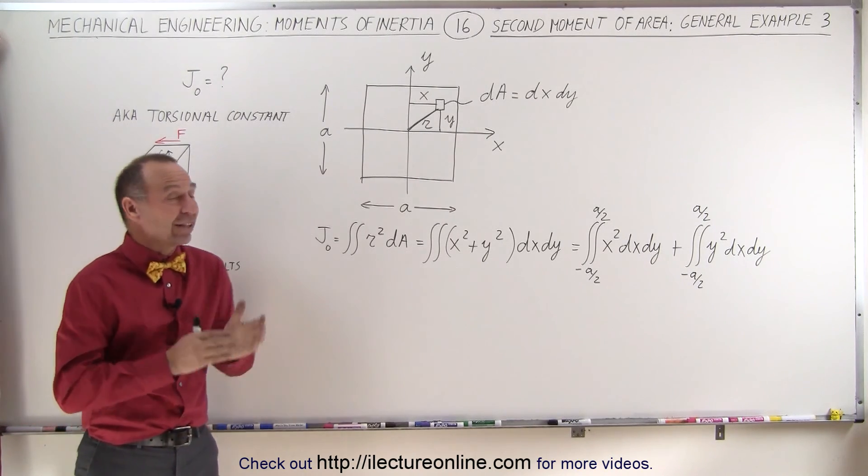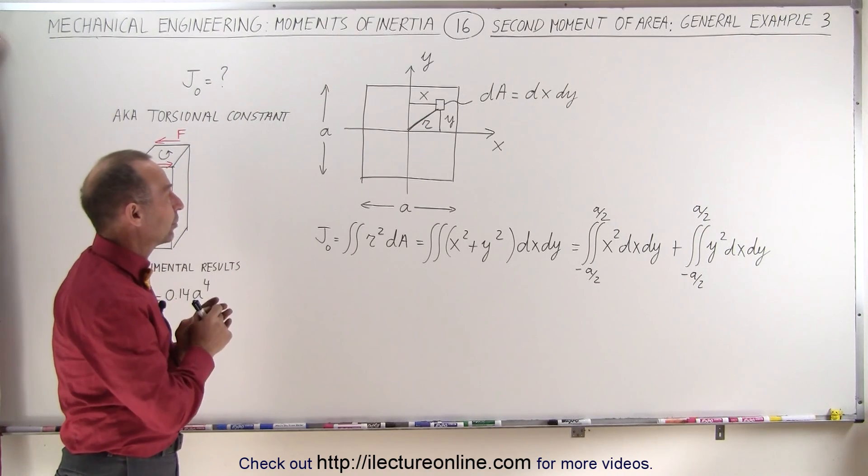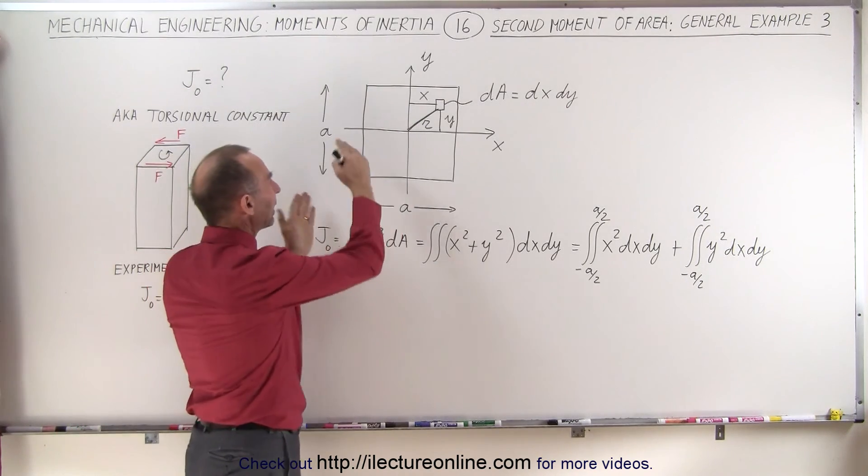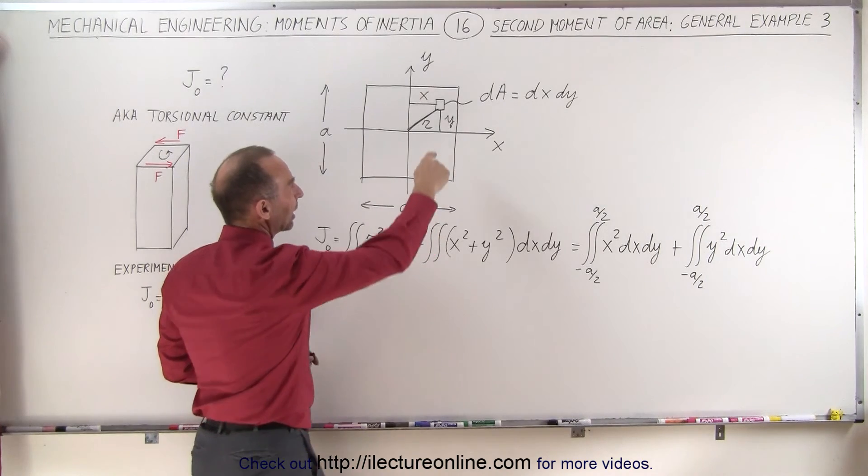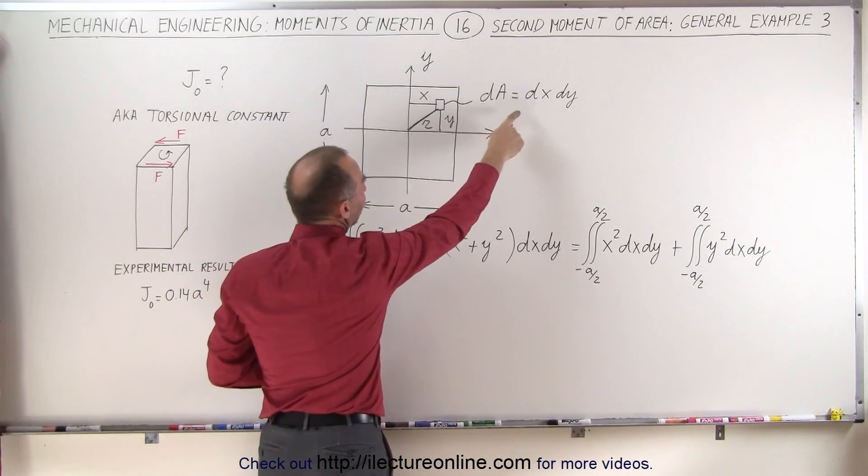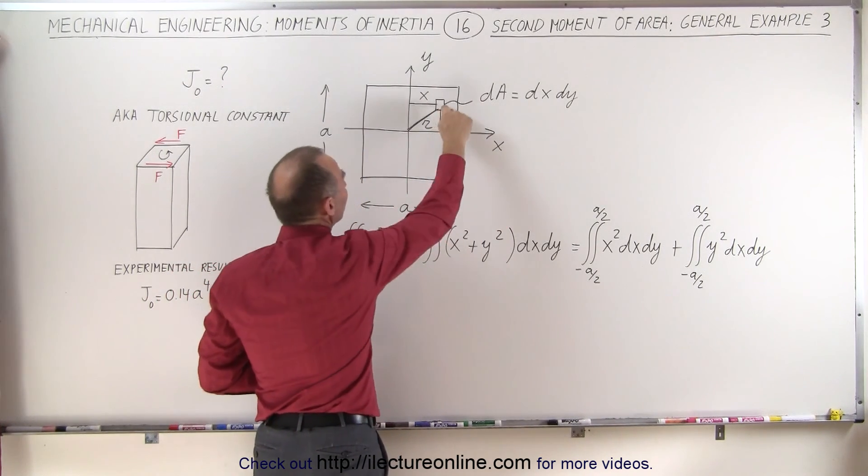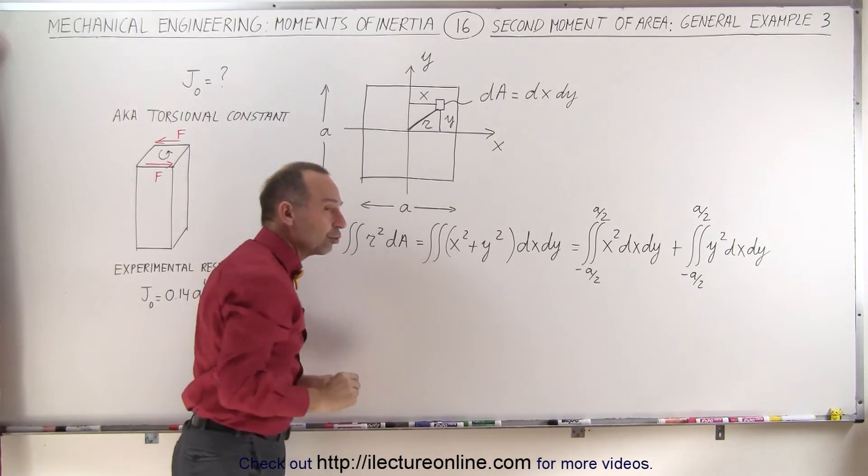Here we're trying to find the second moment of area of a square. The square has dimensions A by A, and we have an area element here, dA, which is defined as dx times dy, a distance r away from the origin.